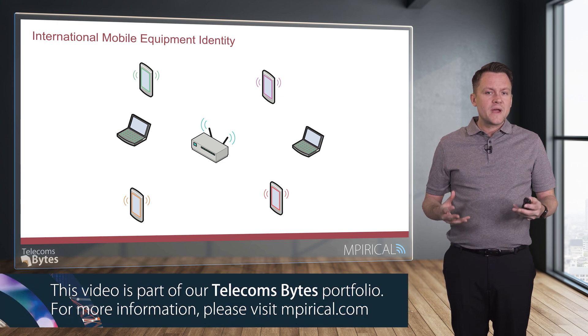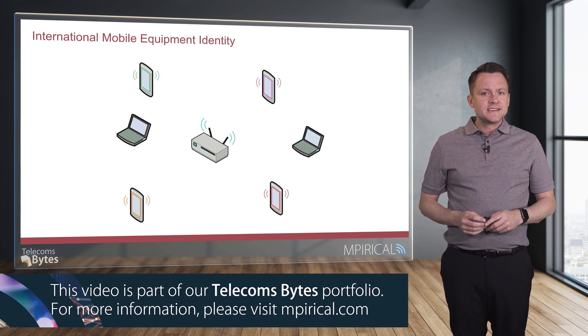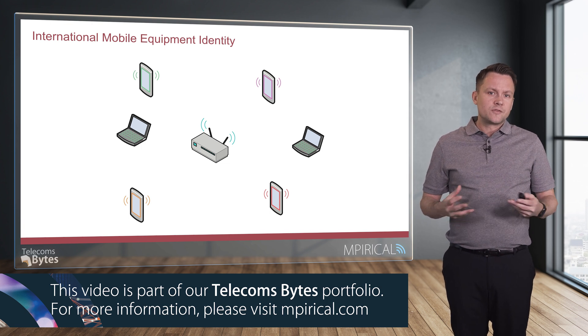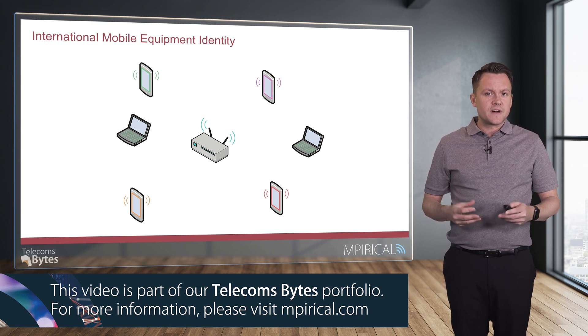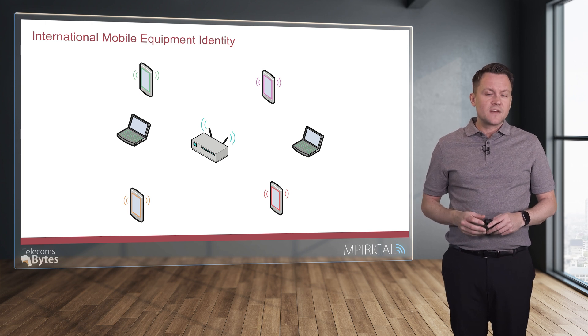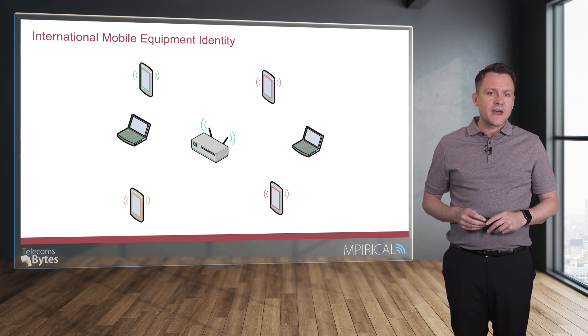One of the main reasons that we have the IMEI is that it allows us to control access to the network. For instance, if a device was stolen, the IMEI number could be added to a blacklist and the device would be unable to access the network. We may also do the same if there are technical reasons that a device cannot access the network.